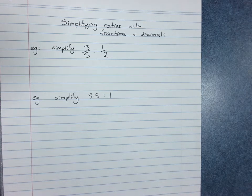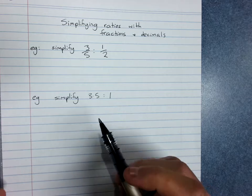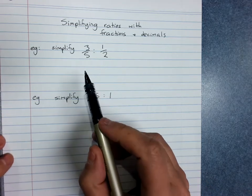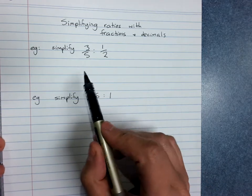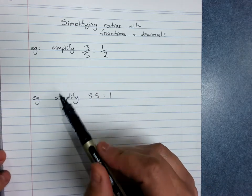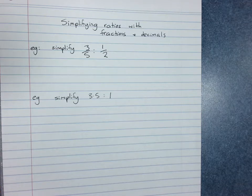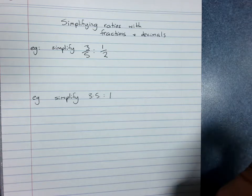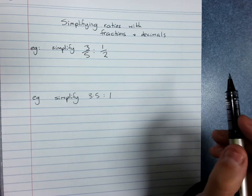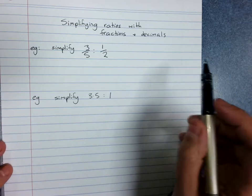Simplifying ratios with fractions and decimals. If we have fractions or decimals in a ratio, we do need to get them to whole numbers. A simplified ratio has the smallest possible whole numbers in it.